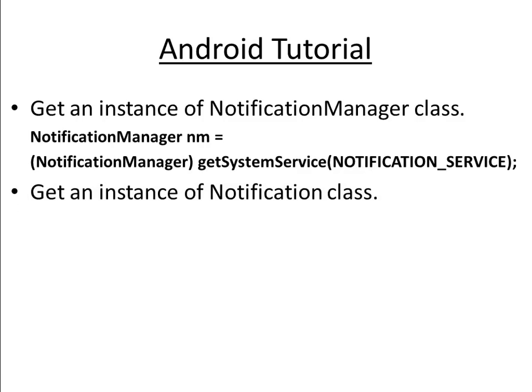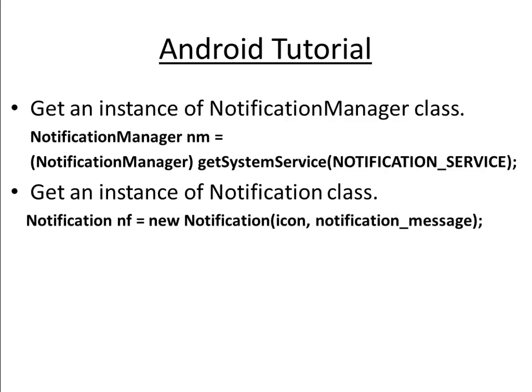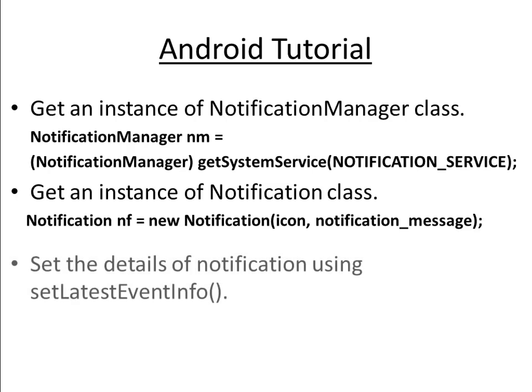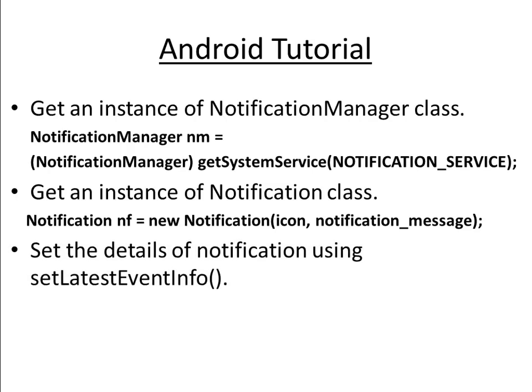The next step is to create or get an object of the Notification class. Here is the syntax: Notification nf = new Notification. There are two arguments: icon and NotificationMessage. And finally, you have to set the notification details using the method called SetLatestEventInfo.